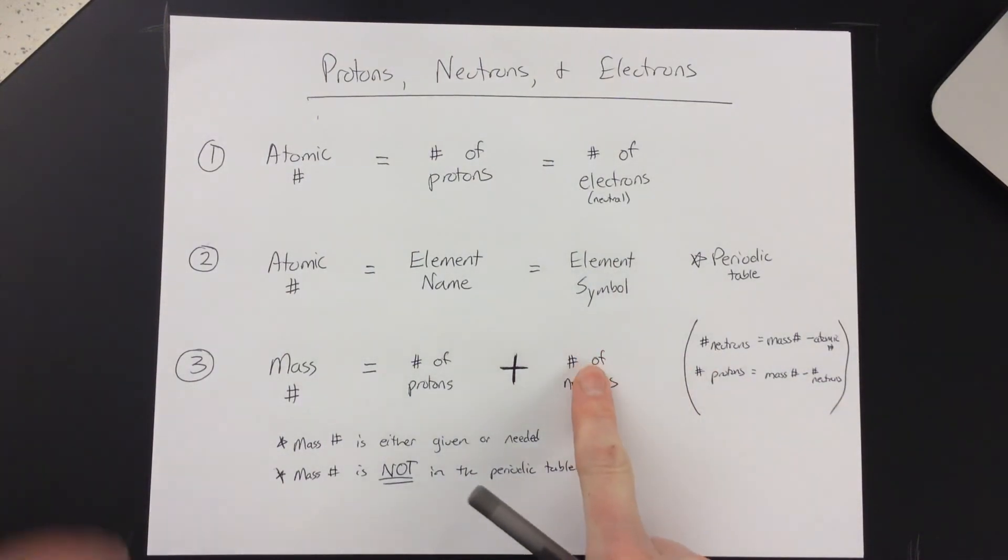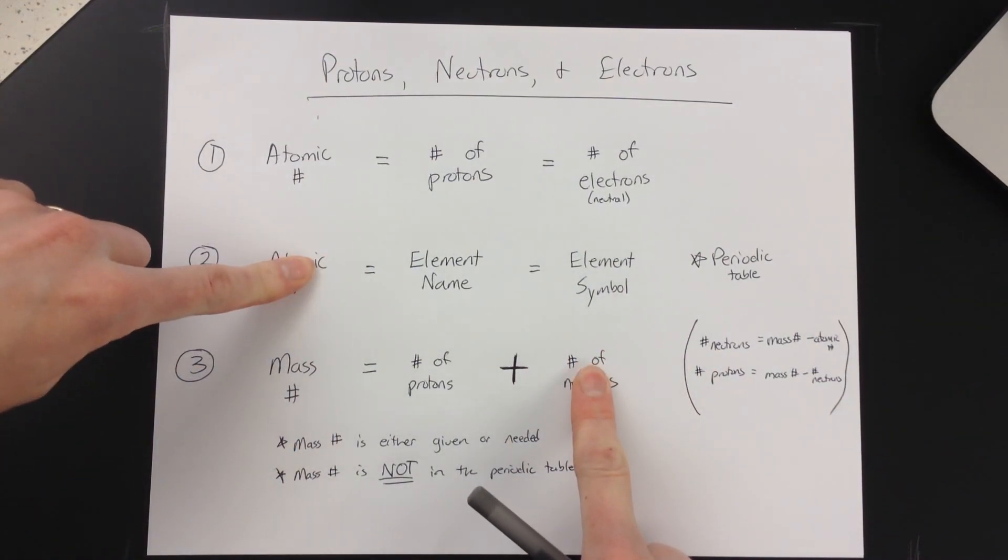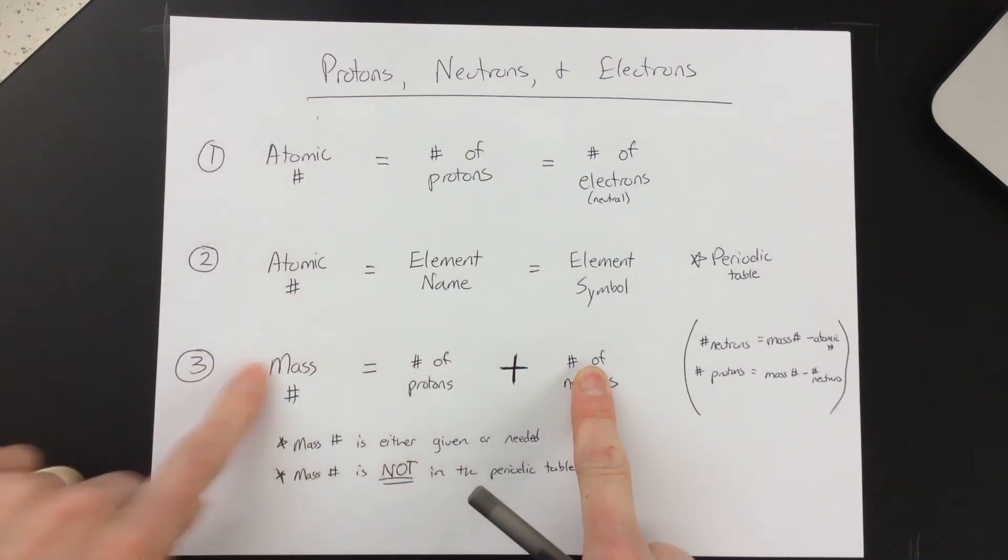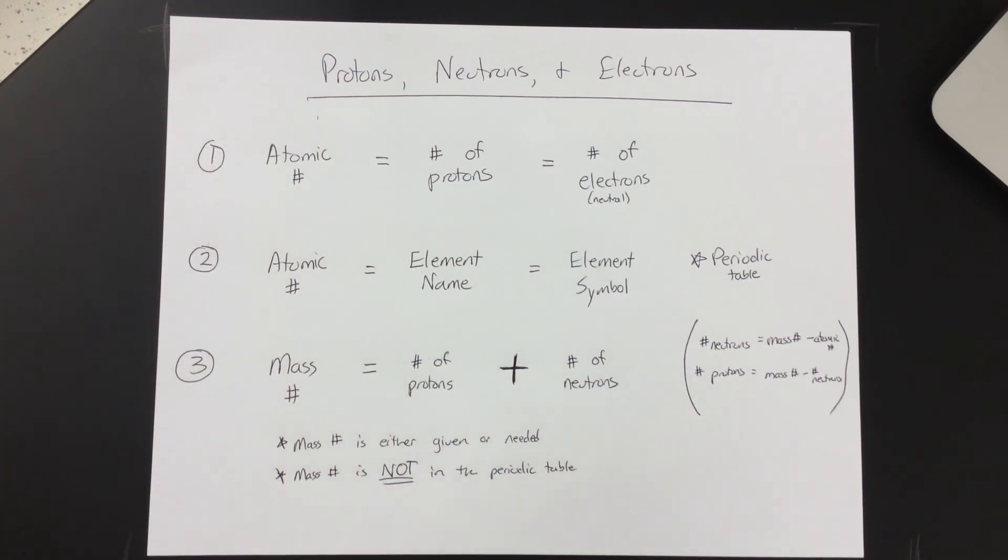Oh, I have the number of neutrons and the atomic number. Okay, so then I can get to the number of protons to find my mass number. You can do this. You just have to know what you have and what you need. So if you need some more practice or you want to go through some of them with me, make sure you ask. Thanks.